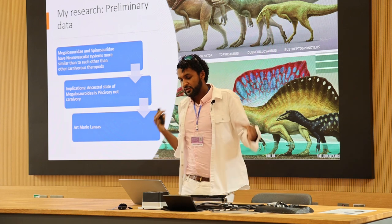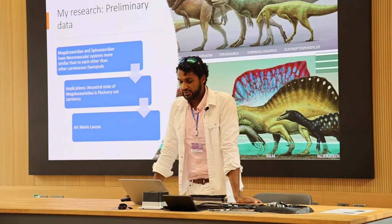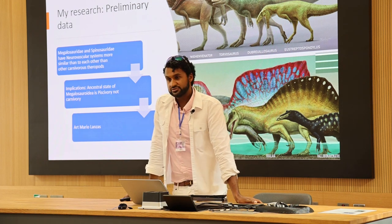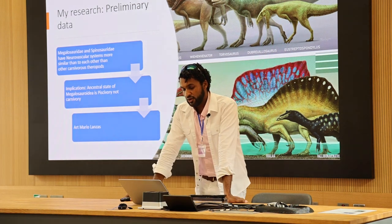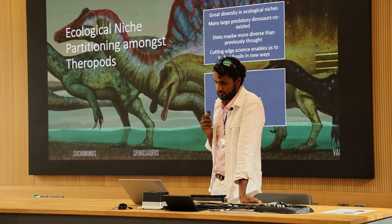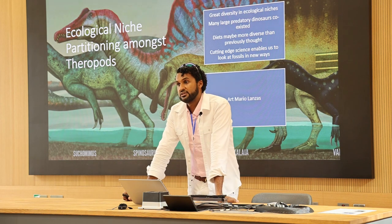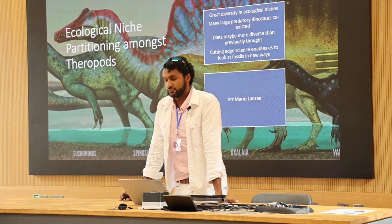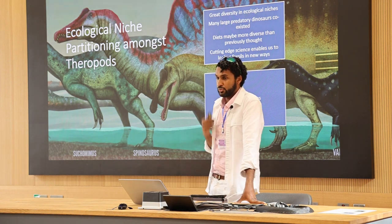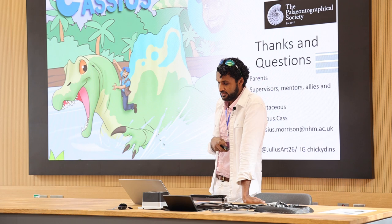So in summary, my primary research — my PhD — suggests that Megalosaurus and Spinosaurus have neurovascular systems more similar to each other than to other carnivorous theropods, suggesting that Megalosaurus had more diverse diets than previously thought. We can use cutting-edge science and technologies to look into fossils in a new way. Thank you for listening — happy to take any questions.